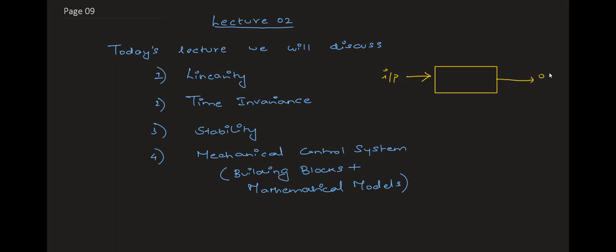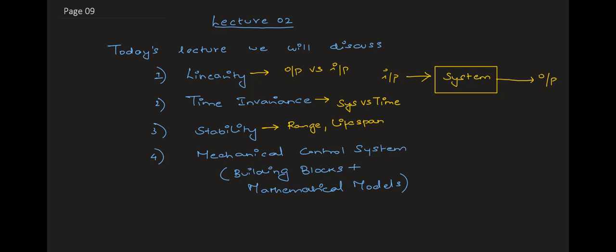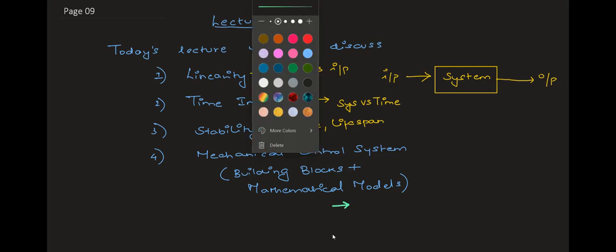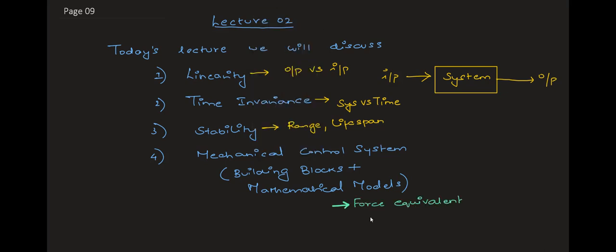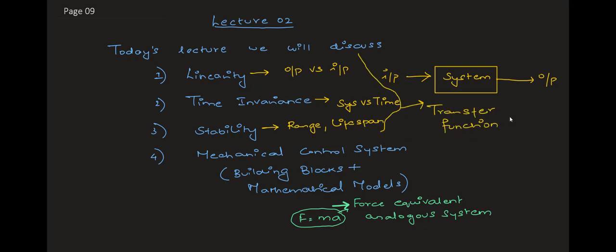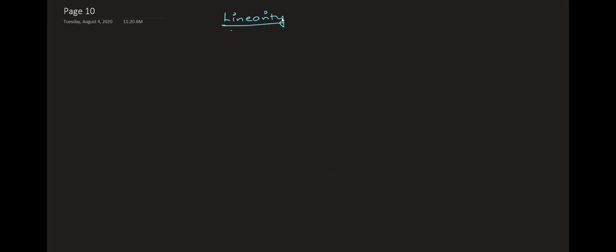Linearity and time invariance have something to do with your system. We can say that a system is linear time invariant and the stability of the system depends on its range and lifespan. The mechanical control system is a force equivalent analogous system with F equals MA representation. These LTI systems are important for your transfer function and efficiency, which will be seen in the coming lectures.